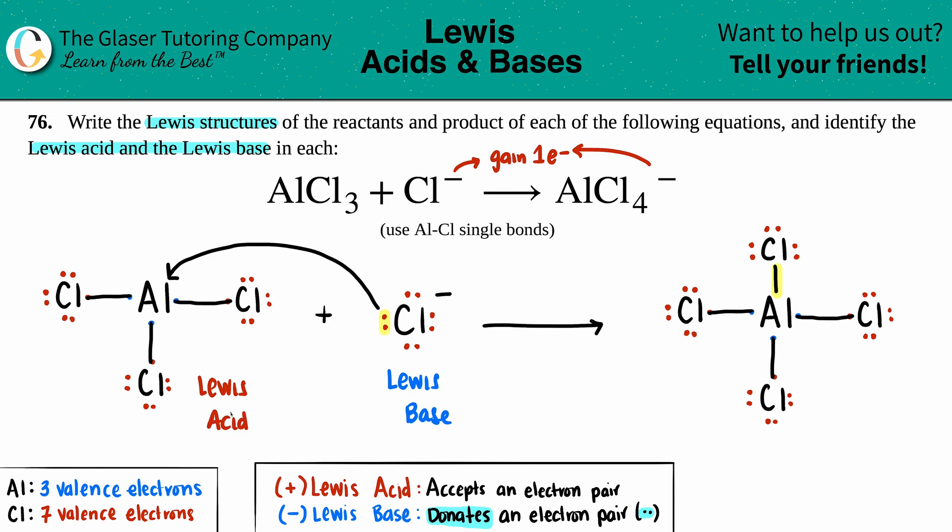Just know that your Lewis base and your Lewis acid is never going to be on the product side, but we use the product to just see what's going on. If I did want to find out who had the negative charge here, we could do the formal charges on each element, and it seems that aluminum will now have that negative charge.